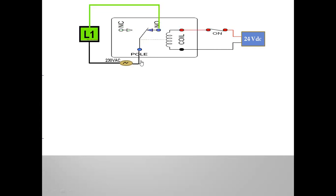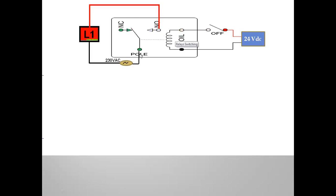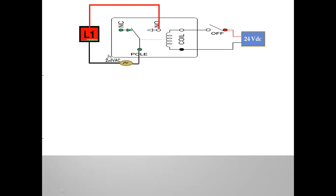Across this pole, I have connected some supply — it is providing supply to the lamp. From PLC, I am getting 24 volts DC only, but for your output, we require 230 volts AC. For connecting a contactor also, we need 230 volts AC supply. So at the secondary end I am providing the output supply, while at the primary end I am giving only control DC. That is the advantage with the relay — we are converting the supply.